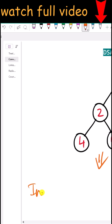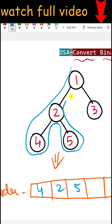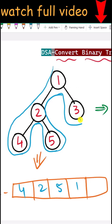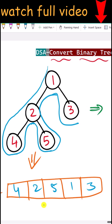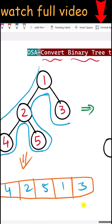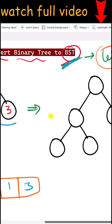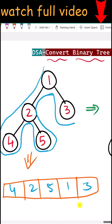First, we perform an in-order traversal of the tree. We start the traversal and whenever we reach a leaf node, that counts as one step. So the in-order traversal gives us: four, two, five, one, three. These values are not sorted, which confirms this is not a binary search tree — in a BST, in-order traversal values are always sorted.